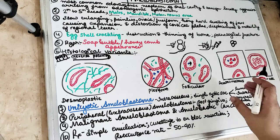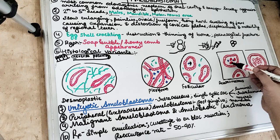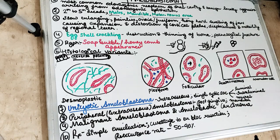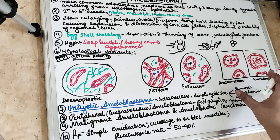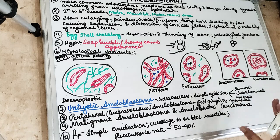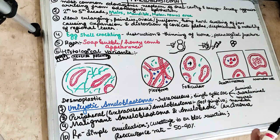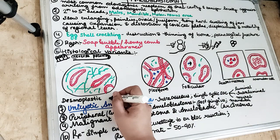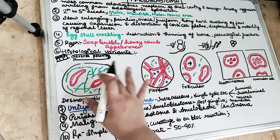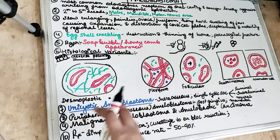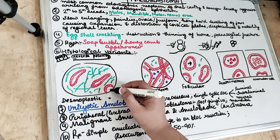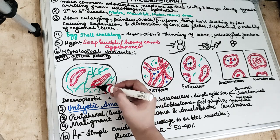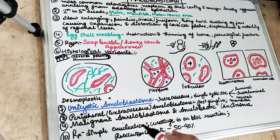In the acanthomatous type, squamous metaplasia takes place in between the follicles. In the granular pattern, there are granular, cuboidal or rounded cells resembling lysosome-like structures arranged in a granular manner. In the desmoplastic type, there is a very dense fibrous stroma — with more stroma compared to other patterns — along with thin cords of epithelial cells present within the desmoplastic stroma.